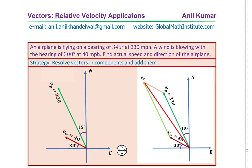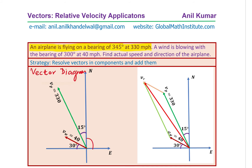Now let us see how we really begin solving such a question. Going through the statement once again: an airplane is flying on a bearing of 345 degrees at 330 miles per hour. So you need to draw a vector diagram. This is what we are showing here, which is a vector diagram. From north, we have shown that this plane, written as VP, is flying at 330 miles per hour, and the bearing angle is 345 degrees.